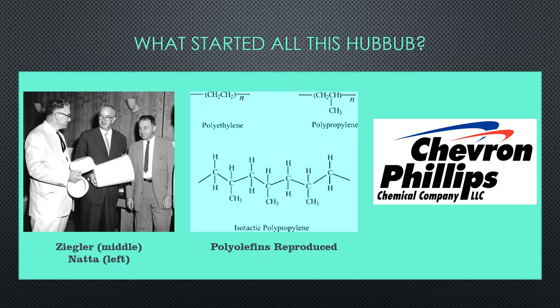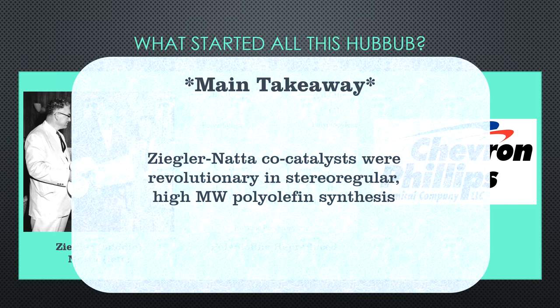Professor Giulio Natta showed that Ziegler catalysts led to stereoregular polymers, and he also named Ziegler catalysts for the first time in literature and in his patents. Natta was able to synthesize stereospecific polypropylene in 1954 using titanium trichloride and triethyl aluminum. The polypropylene was observed to be isotactic and was patented by Natta. Adjacent to both Ziegler and Natta, Phillips developed a catalyst for polypropylene production, and those catalysts still account for 40–50% of global HDPE production today. Phillips catalysts involve chromium trioxide and aluminum oxide.